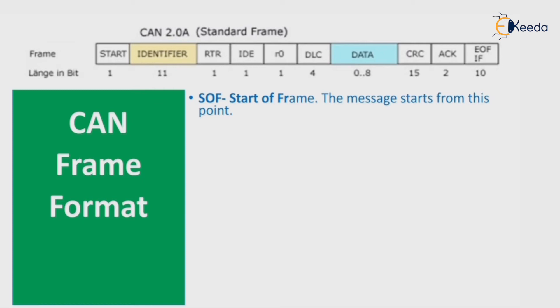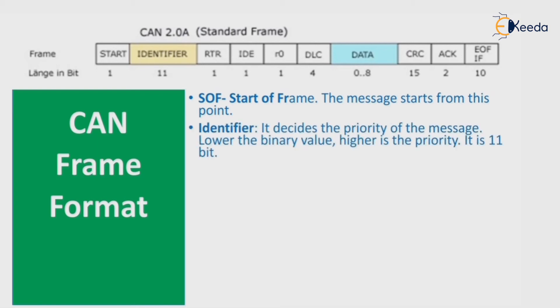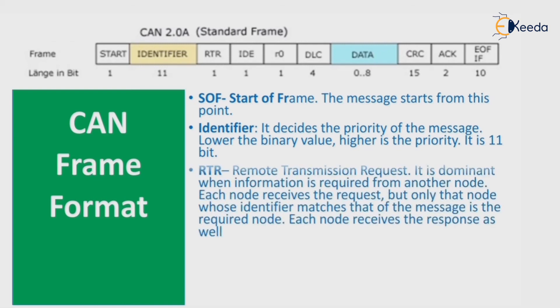SOF is the Start of Frame — the message starts from this point. The Identifier identifies the priority of the message: the lower the binary value, the higher the priority. It is 11 bits. RTR — Remote Transmission Request — is dominant when information is required from another node.